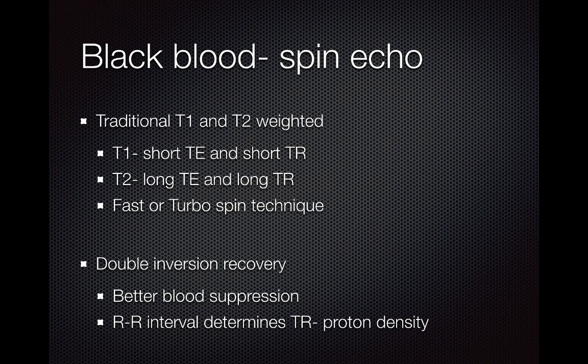Let's start with the black blood images, which are used traditionally for anatomy. These are generally a spin-echo pulse sequence, traditionally T1 or T2-weighted. Just to remind you of basic physics: whenever an image is T1-weighted, it has a short TE time and a short TR time. If an image is T2-weighted, it has a long TE time and a long TR time.